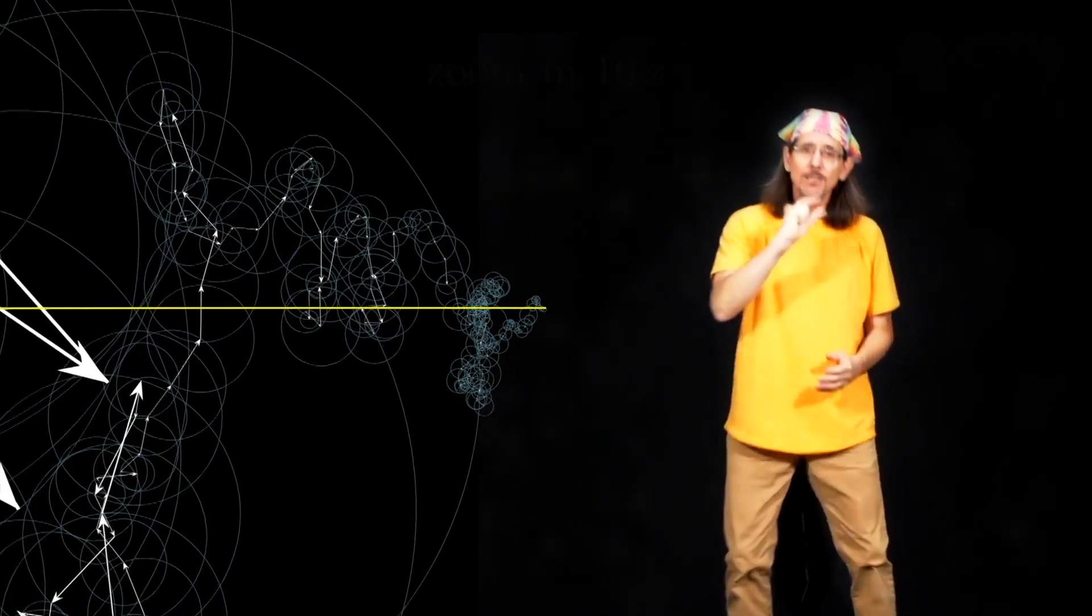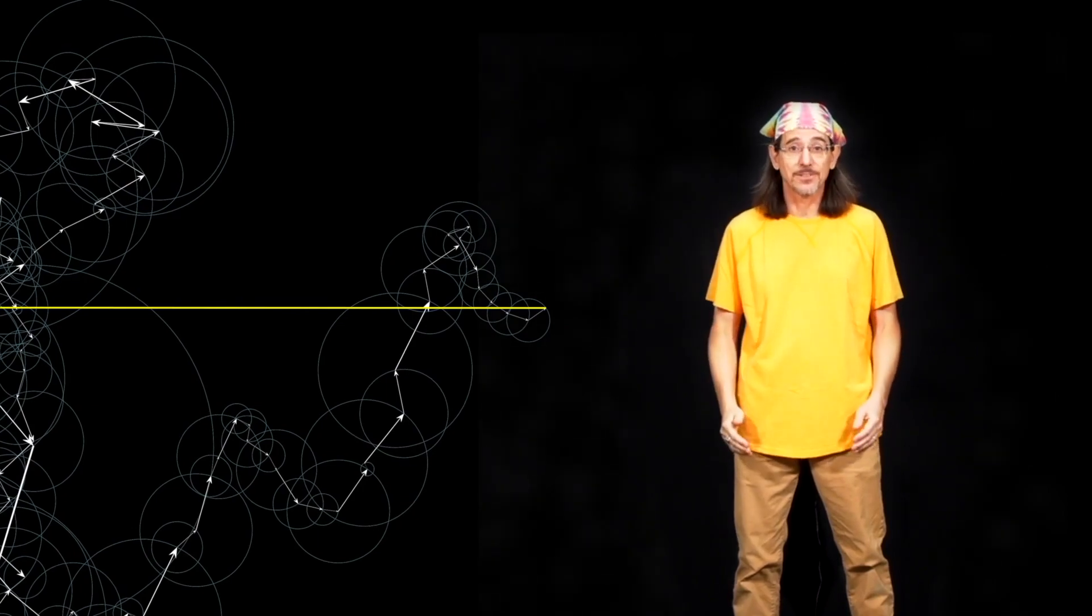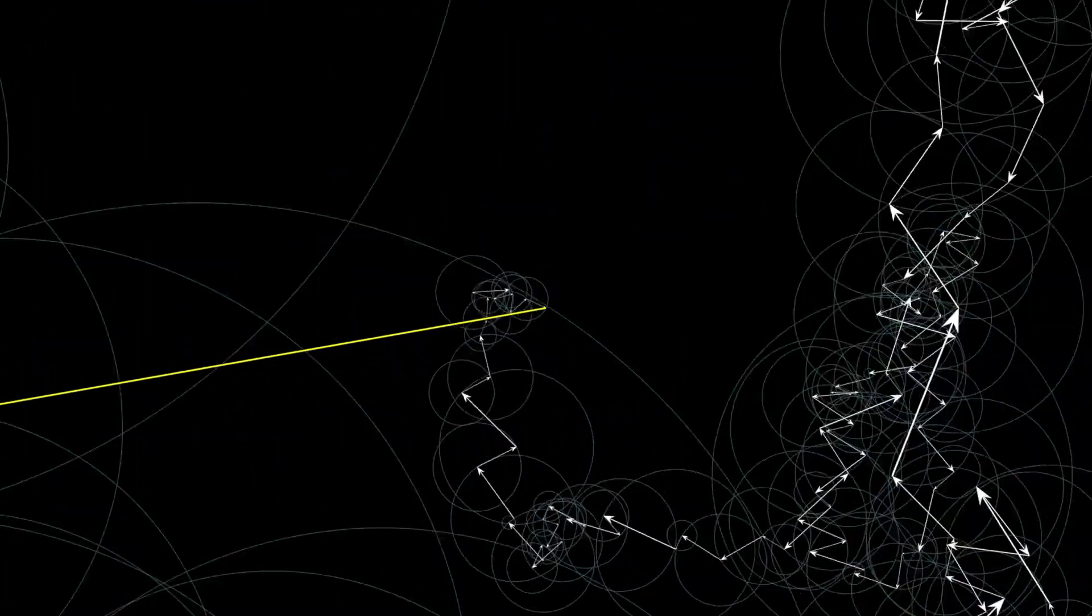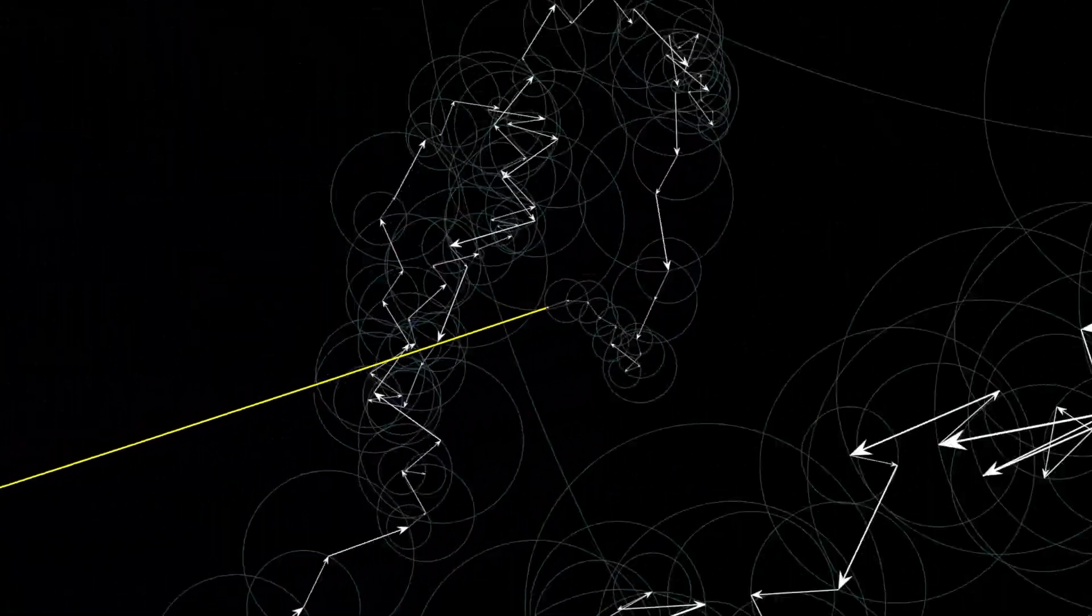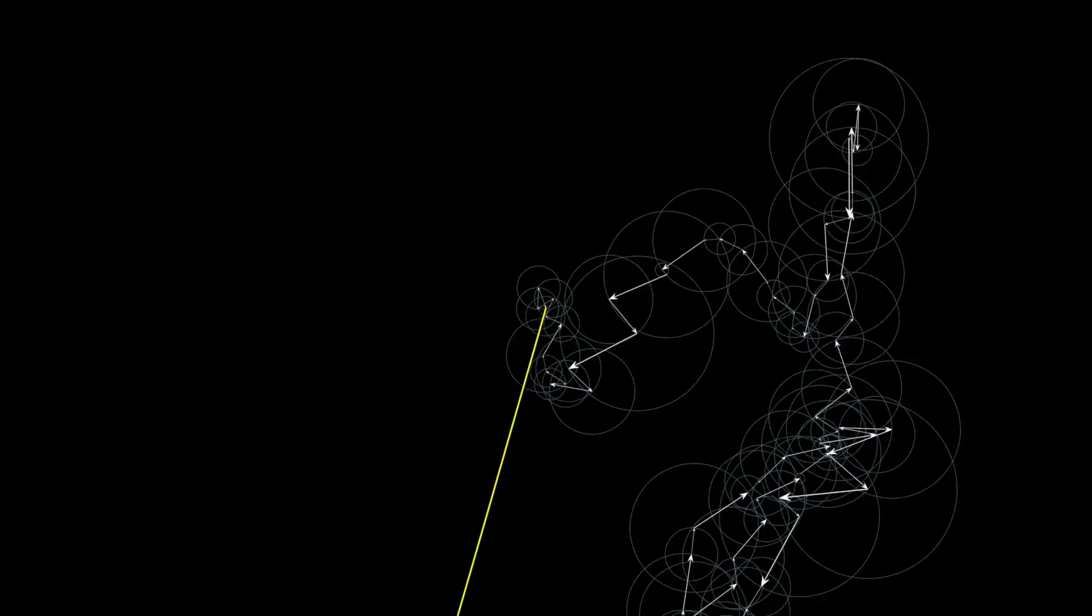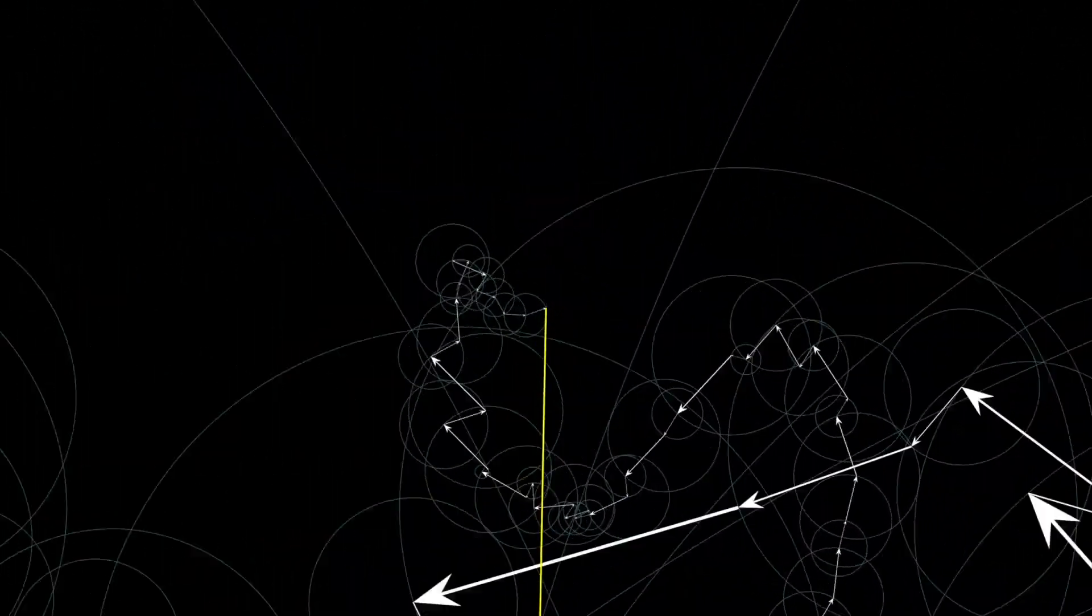And if we zoom in just a little more, we can finally make out the details of the smallest arrows. At this point, we've zoomed in by a factor of 1,000. The final arrow seen here is approximately 5,000 times smaller than the largest arrow we saw at the beginning.